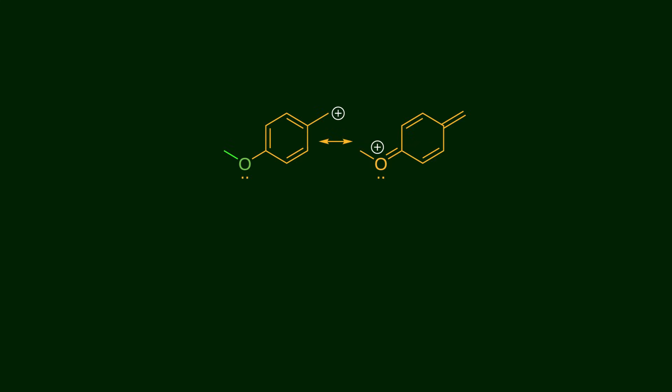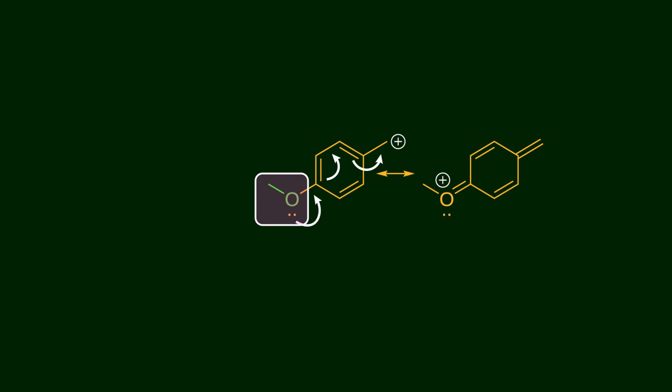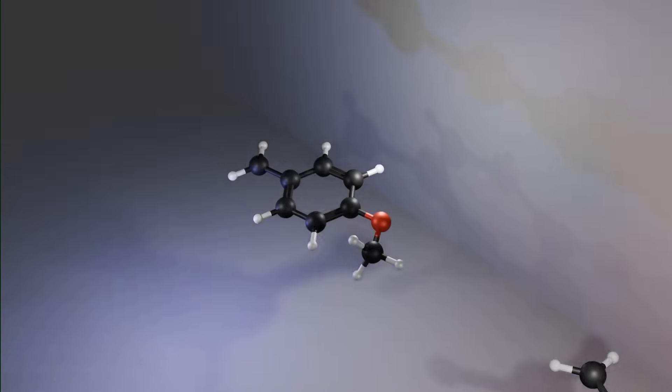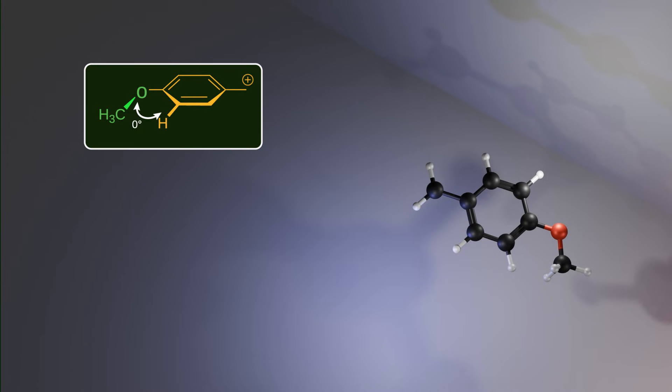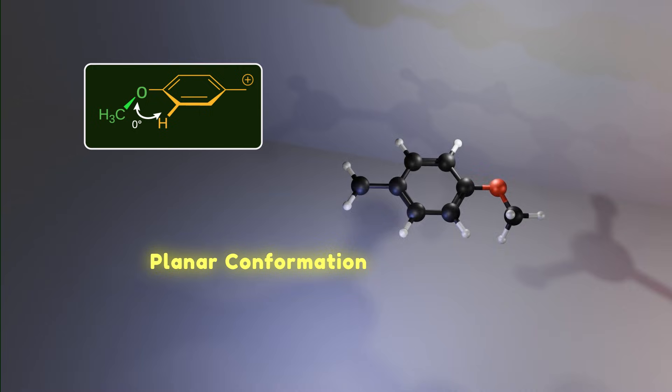Here is a methoxy group that stabilizes the carbocationic center by resonance. Usually, we demonstrate this resonance with electron pushing arrows, but I'm gonna go deeper. Have you ever noticed the orientation of the methoxy group? There are two conformations for the orientation of the methoxy. In the first one, the angle between the methoxy group and the phenyl ring is zero. This is called planar conformation.